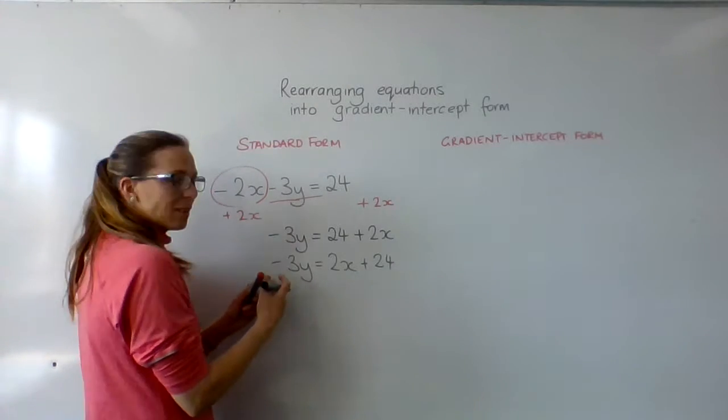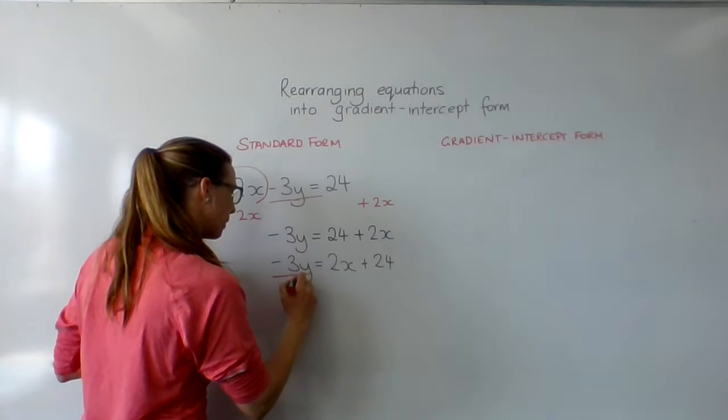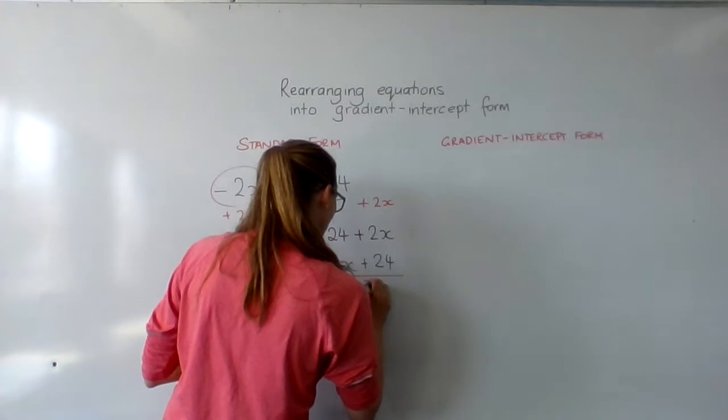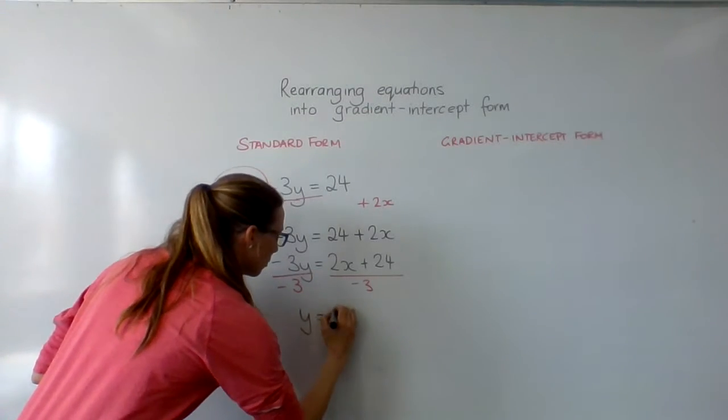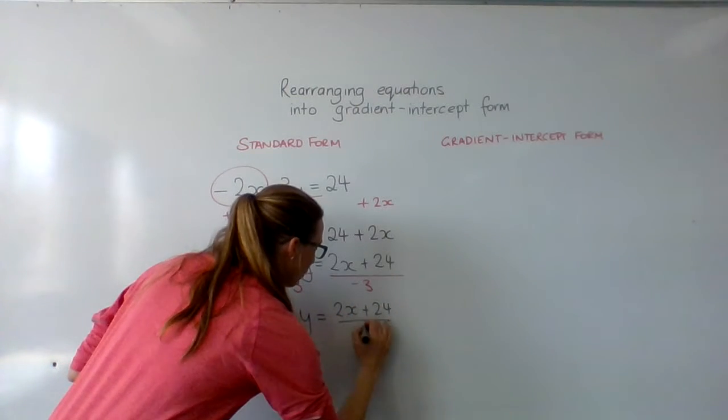Now this y isn't quite y equals, it's been multiplied by 3, sorry, negative 3. So I need to divide this by negative 3, which means I need to divide this side by negative 3. This leaves me with y = (2x + 24)/-3.